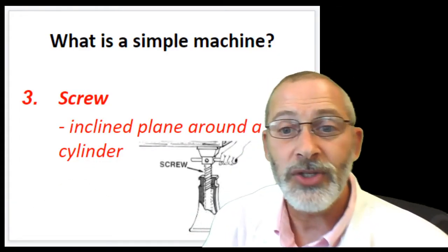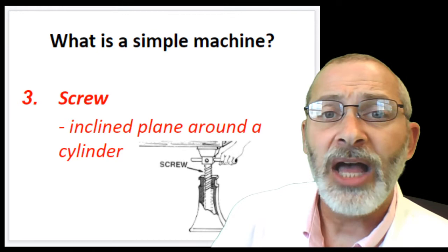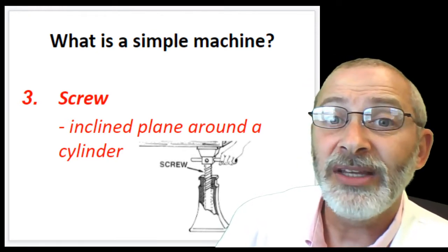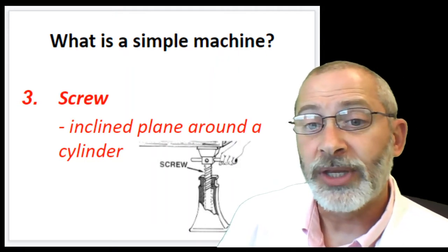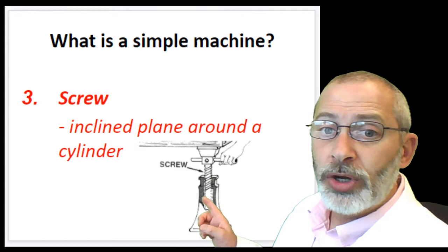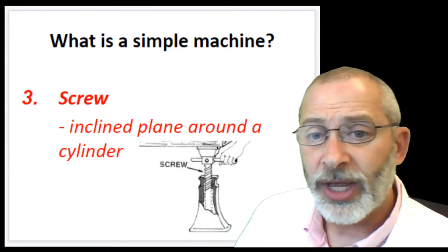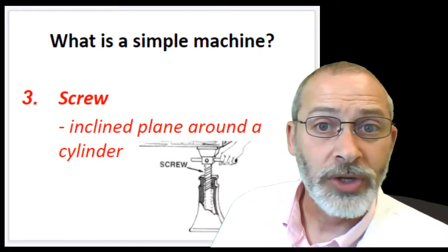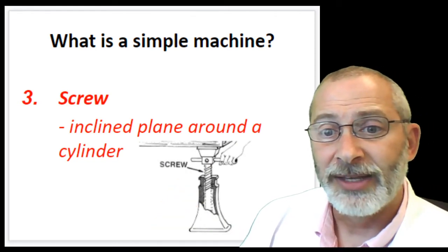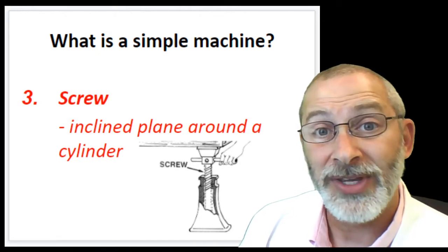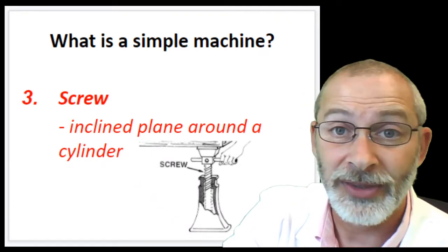All right, let's move on to number three. Number three is called a screw. A screw is an inclined plane around a cylinder. We can see this example of a car jack — some car jacks work with a screw. When you turn the screw, you can lift enormous weights. This might actually be a house jack, which works similarly — you can prop up an entire house by turning a screw, doing an enormous amount of work. Let's see if you can pick out the screw in the next picture.